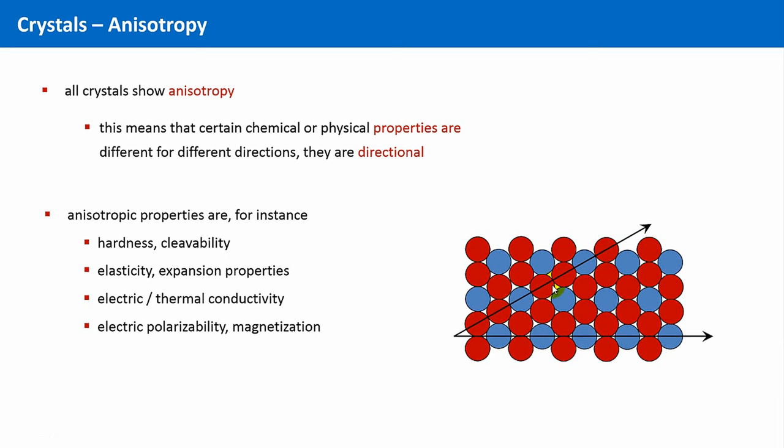Now let's take another direction, this one here. Here the situation is obviously different. Now we have two red spheres, a blue one, two red spheres and a blue one, and so on. But the pairs of the red spheres are oriented perpendicular to the blue ones, and the blue ones lie in the indentation that are created by these two red spheres.